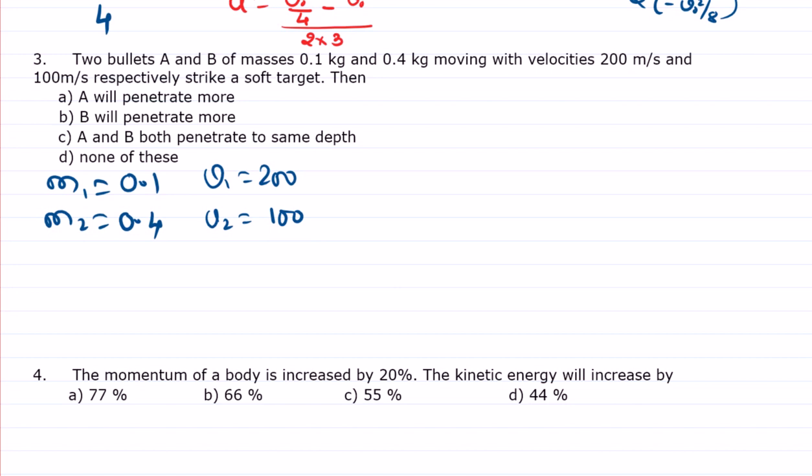Respectively strike a soft target. Then, okay, so the penetration, A will penetrate more, B will penetrate more. So the question is like this. So first you have to calculate the kinetic energy of the first one is half m v². So penetration means change in kinetic energy. So here half, it is 0.1 into 200².